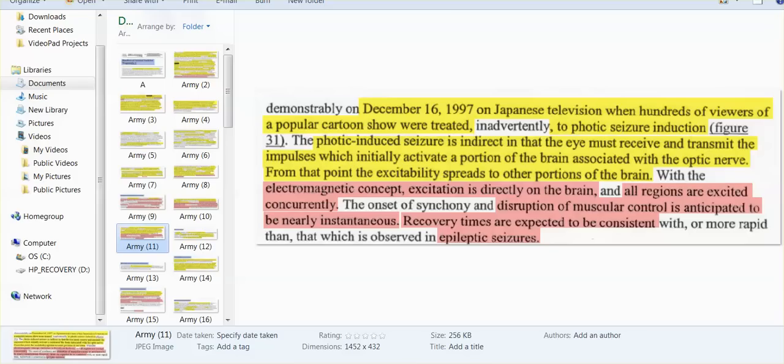December 16, 1997 on Japanese television when hundreds of viewers were watching this popular cartoon show, they were treated inadvertently to photic seizure induction. It was an indirect photic shot at their eye. The photic induced seizure is indirect in that the eye must receive and transmit the impulses which initially activate a portion of the brain associated with the optic nerve. From that point, the excitability spreads into other portions of the brain. With this electromagnetic concept, excitation is directly on the brain. All regions are excited concurrently. Disruption of muscular control is anticipated to be nearly instantaneous and the recovery times of this induced seizure they can make it look as if the person has epilepsy.